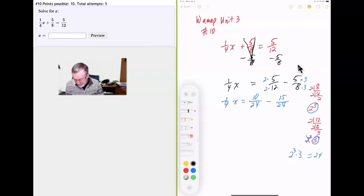(1/4)x equals 10/24 minus 15/24. If you think of this as positive 10/24 and this as negative 15/24, we've got numbers with different signs being combined. We take the difference between those two numbers, which is 5. Then we take the sign of the number that has the greater absolute value. 15 is bigger than 10, it's negative. Keep the negative sign. So (1/4)x equals -5/24.